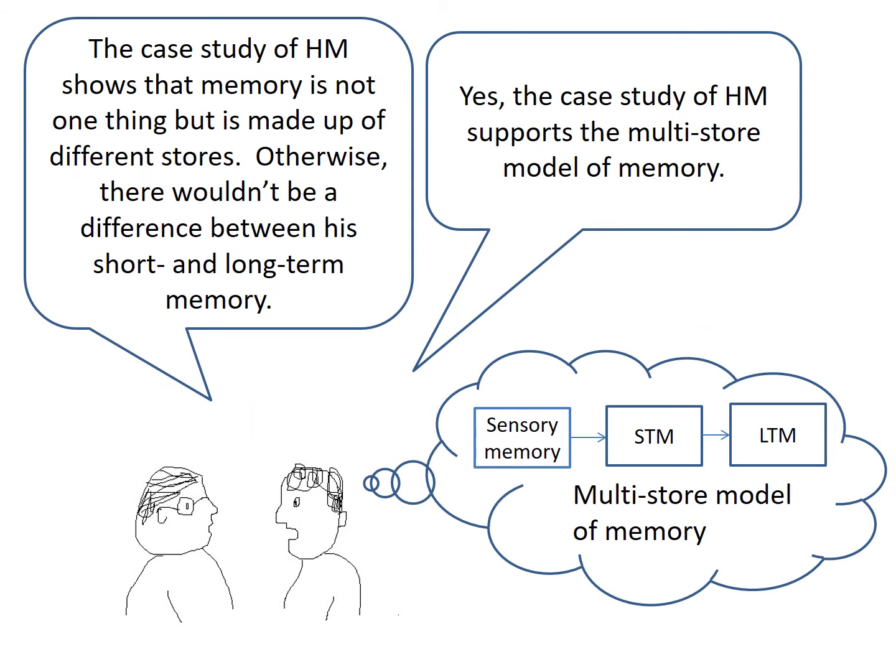The case study of HM shows that memory is not one thing, but is made up of different stores. Otherwise, there wouldn't be a difference between his short and long-term memory. So, the case study of HM supports the multi-store model of memory.